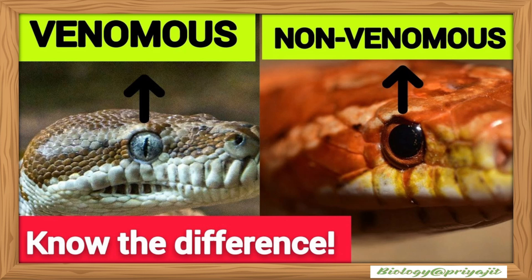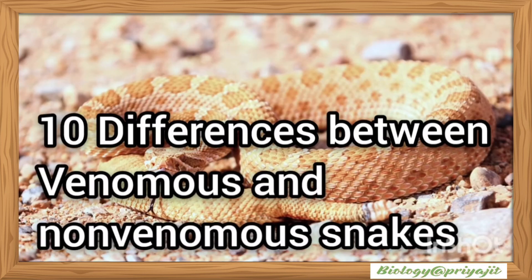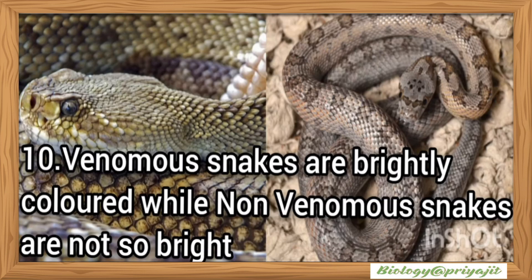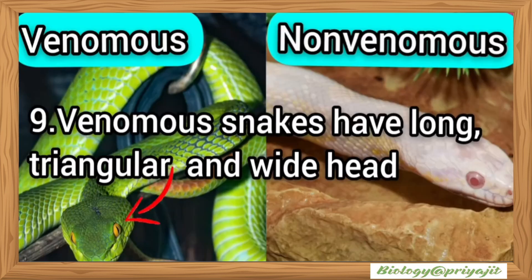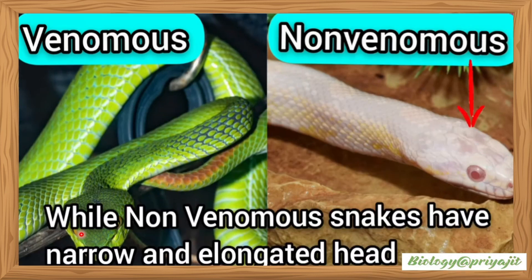Let's start. There are approximately 10 differences between venomous and non-venomous snakes. First, venomous snakes are brightly colored, while non-venomous snakes are not so bright. Second, venomous snakes have a long, triangular, and wide head, but non-venomous snakes have a narrow and elongated head.